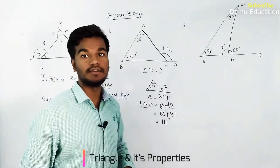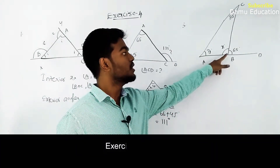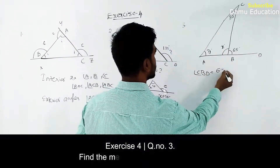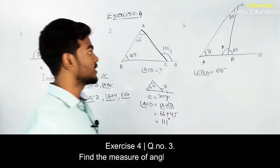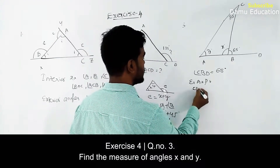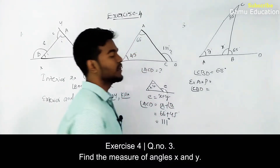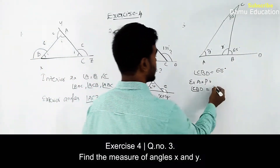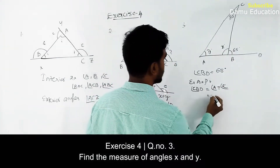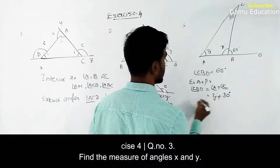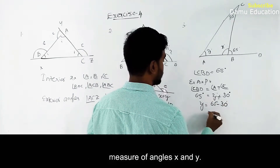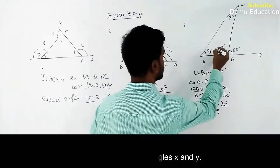The third question: we need to find x and y values. One angle is given — angle CBD is equal to 65 degrees. From the exterior angle property, angle CBD equals angle A plus angle C. Angle A is Y degrees and angle C is 30 degrees. So Y equals 65 minus 30, which gives Y equal to 35 degrees.